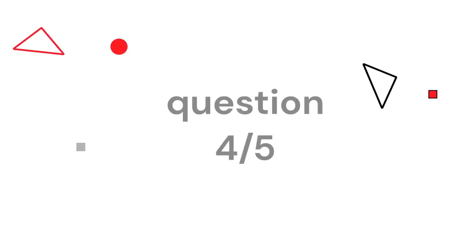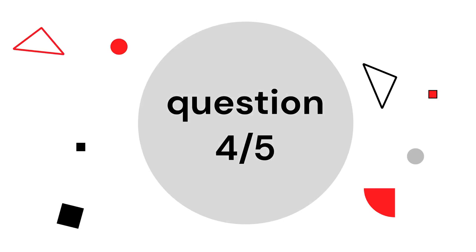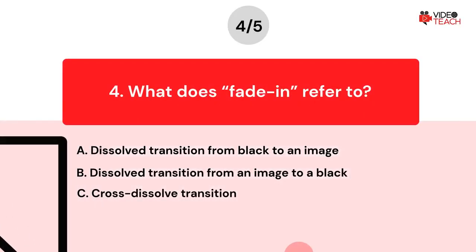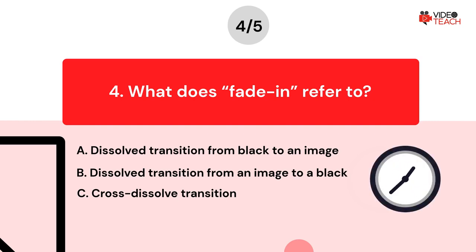Question number four. What does fade in refer to? Option A: Dissolved transition from black to an image. Option B: Dissolved transition from an image to black. Option C: Cross dissolved transition. Now you have about 15 seconds to think about your answer.